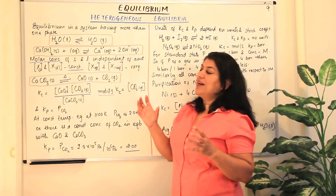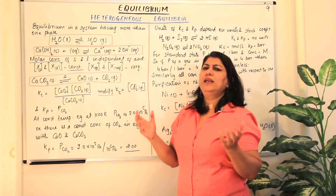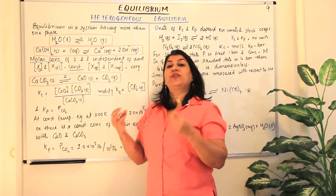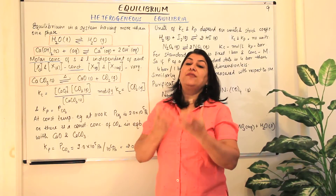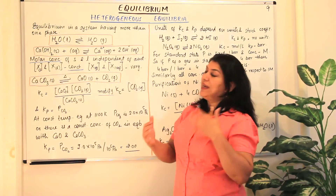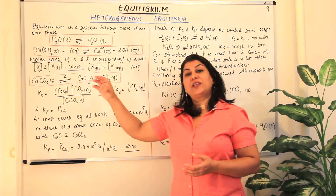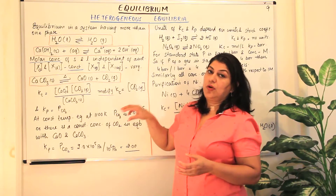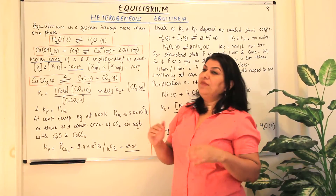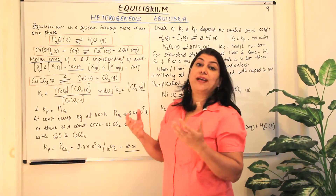When you have a heterogeneous equilibrium, recall that for homogeneous equilibria we calculate the equilibrium constant — the ratio of concentrations of products to reactants, known as Kc — and for gaseous reactants and products we also express it in terms of pressure, known as Kp.